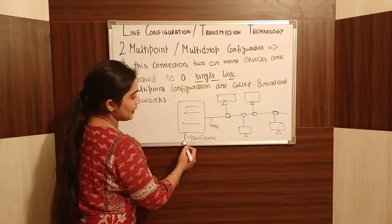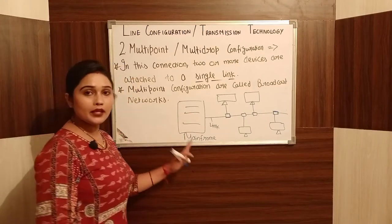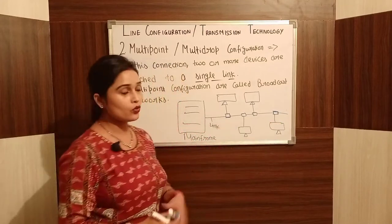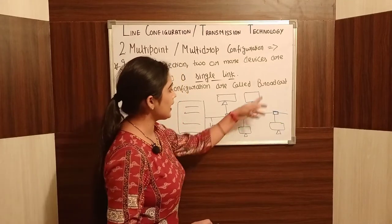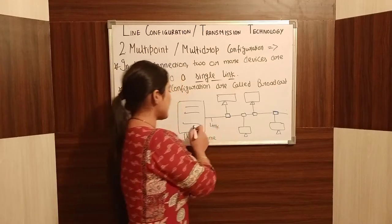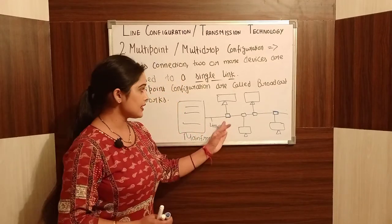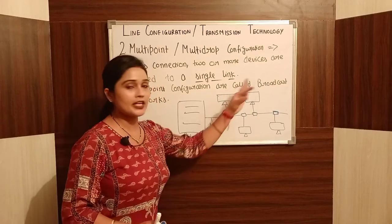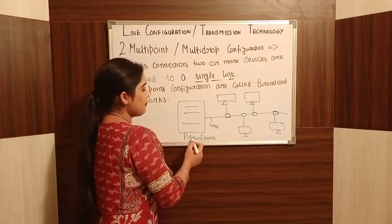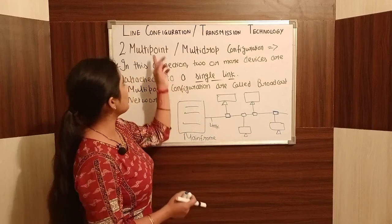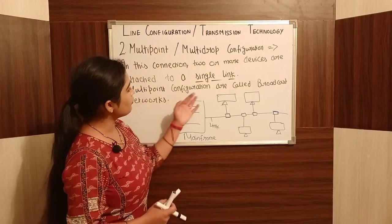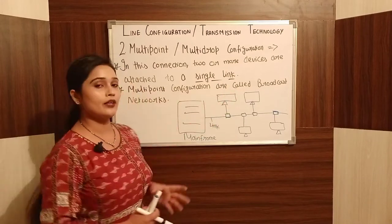For example, a mainframe computer — a mainframe server — can be connected to multiple devices on the same link. That is the multi-point configuration network, where multiple devices are connected to a single point. It is also called a broadcast network.